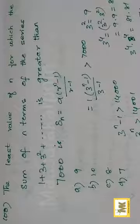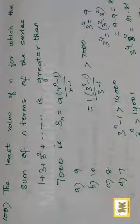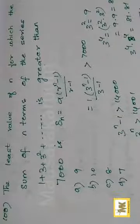The least value of n for which the sum of n terms of the series 1 plus 3 plus 3 squared plus etc. is greater than 7000.